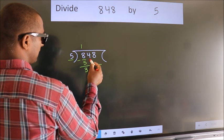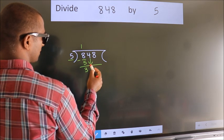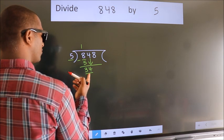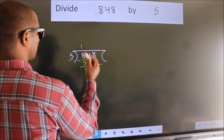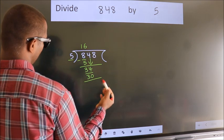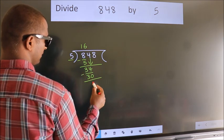After this, bring down the beside number. So, 4 down. So, 34. A number close to 34 in 5 table is 5 6 30. Now, we subtract. We get 4.